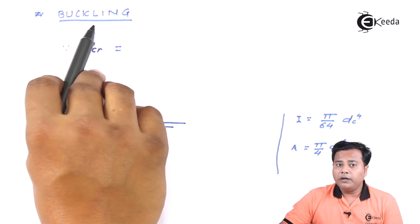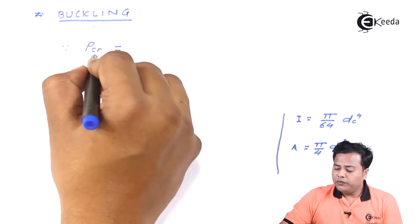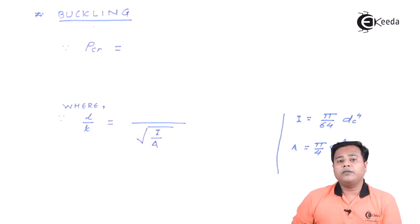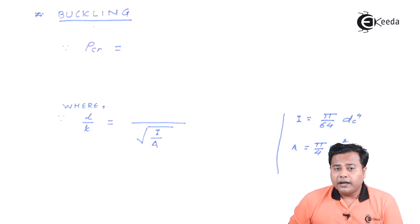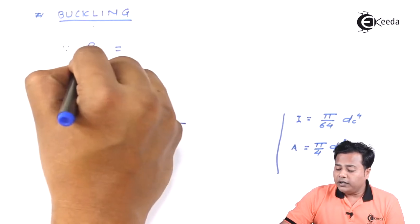Design against buckling of the power screw. Now we know that there is a standard formula given by Rankine for the buckling load.